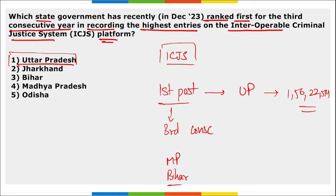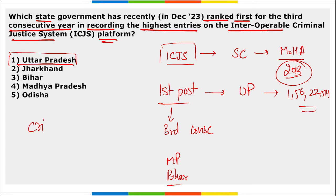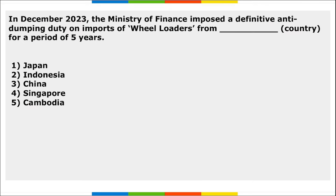The ICJS — Interoperable Criminal Justice System — is an initiative of the Supreme Court of India. It was implemented by the Ministry of Home Affairs and launched in 2013. In simple terms, the ICJS portal acts as a centralized database of criminal records.